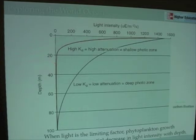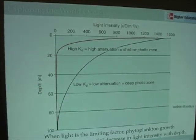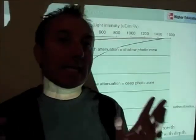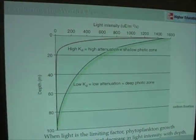Light doesn't penetrate very deeply in a high K_D water column, so we don't expect much photosynthesis below that shallow depth. If we have a water column with a low K_D — fewer absorbers and scatterers — we have low attenuation, a deep photic zone, and light that penetrates more deeply. Following carbon fixation, or photosynthesis, what we find is that it follows these light curves quite nicely when light is the limiting factor for phytoplankton growth rate in the ocean.